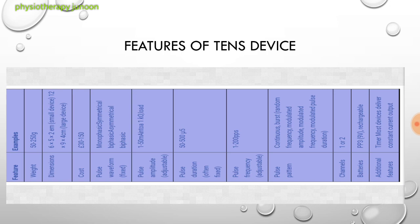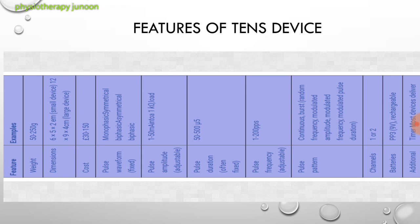Features of TENS devices include: weight, dimensions, cost, pulse waveform which may be fixed monophasic, biphasic, or asymmetric biphasic, pulse amplitude, pulse duration, pulse frequency, pulse pattern, number of channels (one to four channels), battery type, and additional factors.